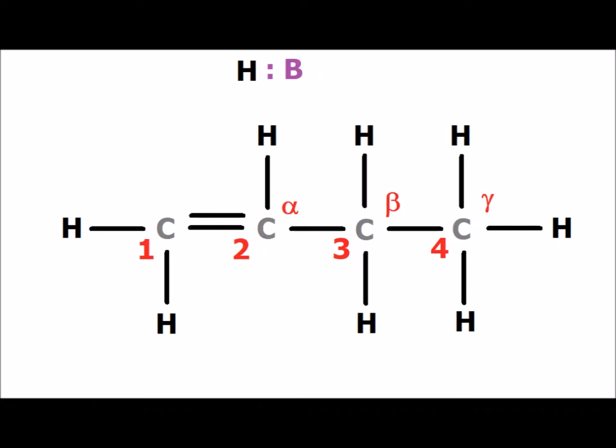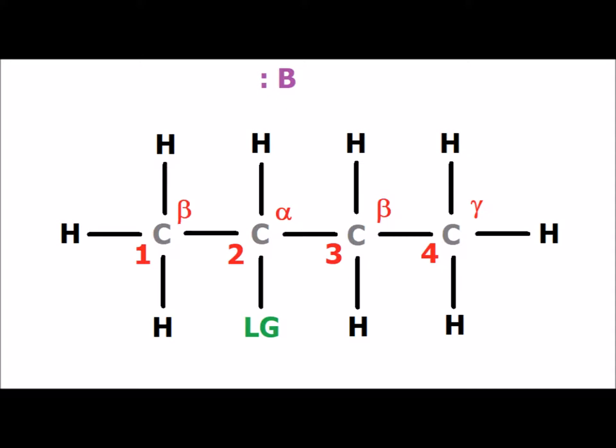If the beta hydrogen from carbon number 1 is abstracted, we obtain this elimination product, 1-butene. Suppose, on the other hand, that the base abstracts a hydrogen attached to carbon number 3. What would our product then be? 2-butene.